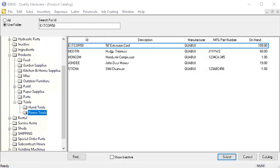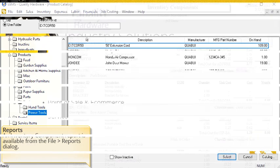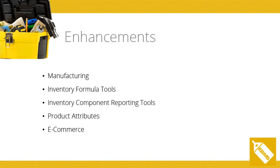That brings us to the end of the section on accessories. An inventory component report is available from the file reports dialog. The components and accessories module is used in a variety of ways and in many different vertical markets. To learn more about how EBMS can better serve your business, visit one of the vertical market pages on our website. Thank you for joining us here at Eagle Business Software. Visit our website to learn more about component and accessories enhancements, options, and features.